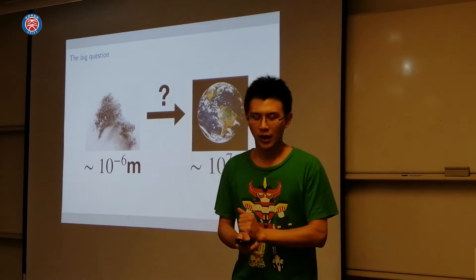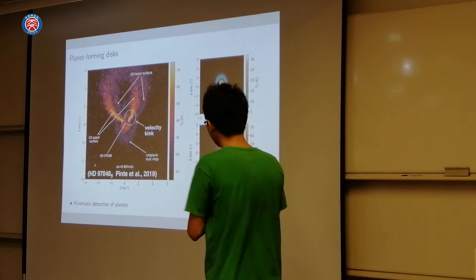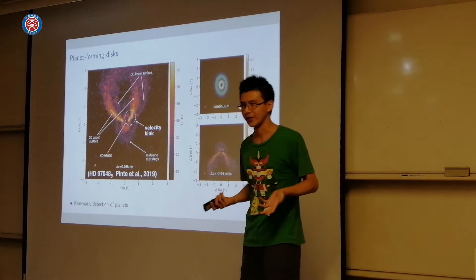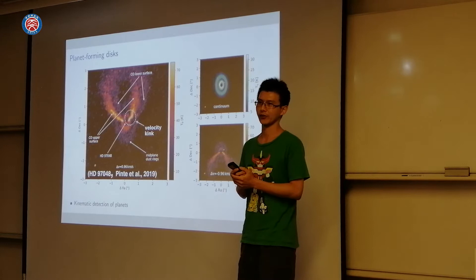So how do we try to understand planet formation? To understand that, we need to understand where planets form. And as we've already heard, planets form in protoplanetary disks. And you're already seeing ALMA images of protoplanetary disks with dust rings and dust gaps.